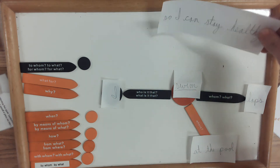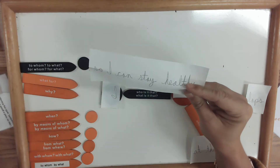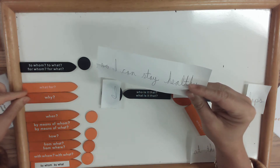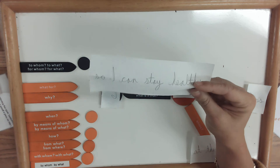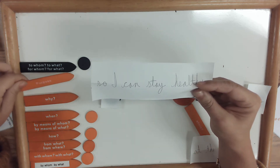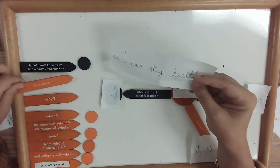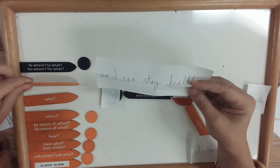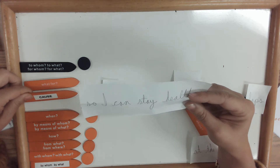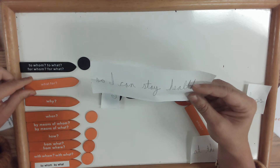So I can stay healthy — now I see two arrows that I think could answer this: 'what for' and 'why.' They sound very similar and might seem like the same thing. 'What for' really answers the question of purpose — what's the purpose? So 'so I can stay healthy' is the purpose of swimming.